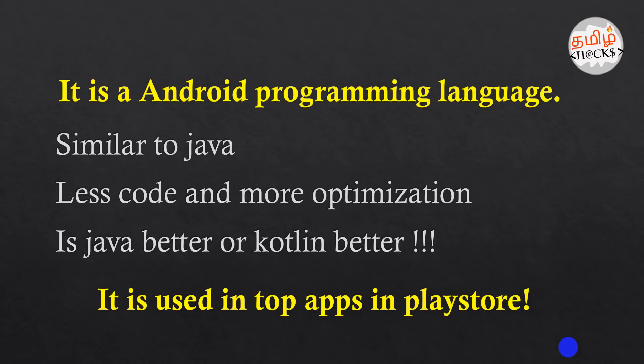We can use Kotlin just like Java — it works every time. You can choose that programming language based on size as well. Now you can see all the top apps in the Play Store also use Kotlin. For example, Alibaba and Zomato — you can also see these top applications with millions of users are built using Kotlin.